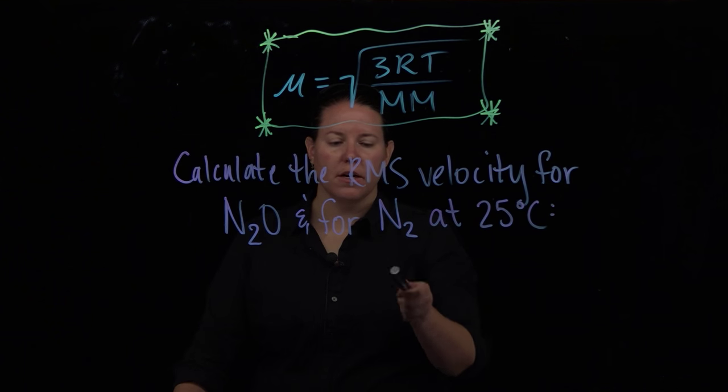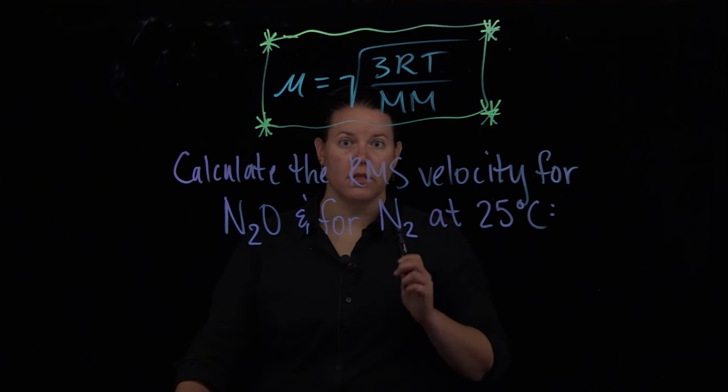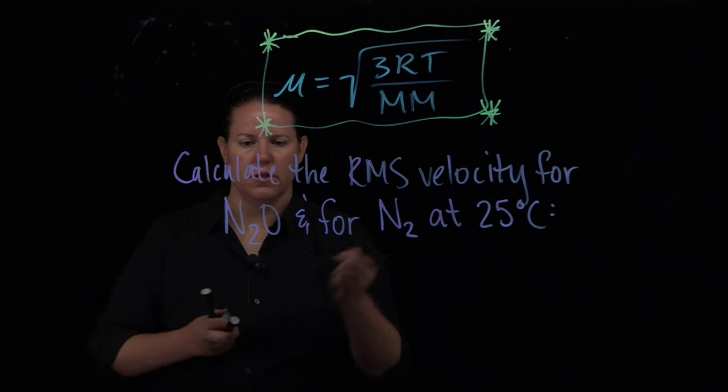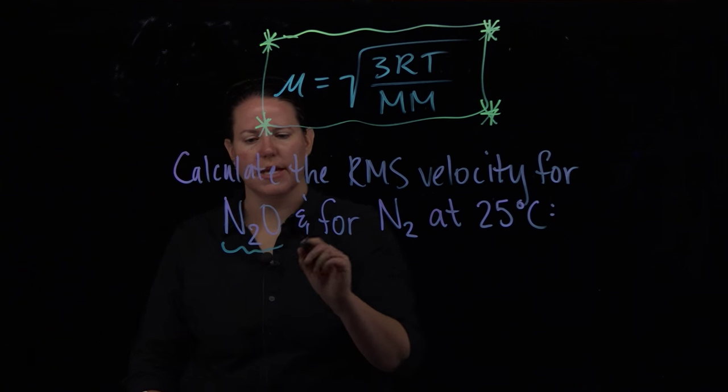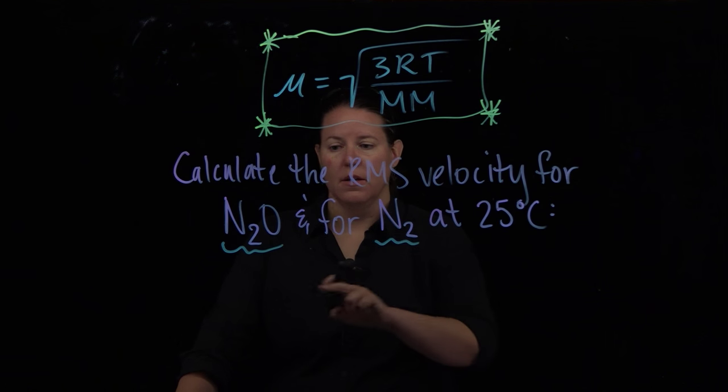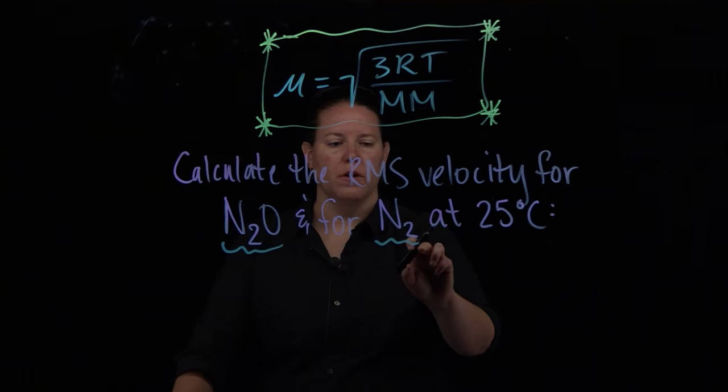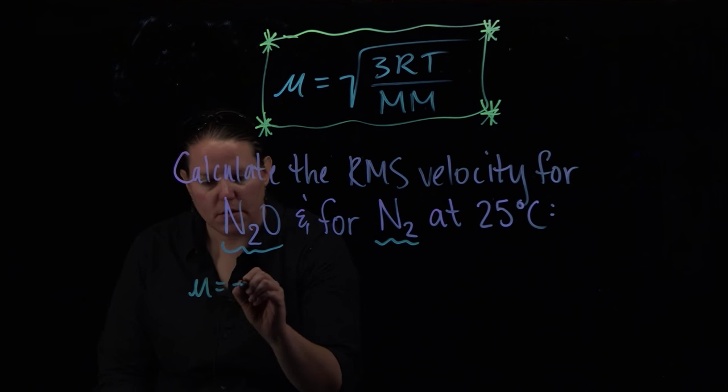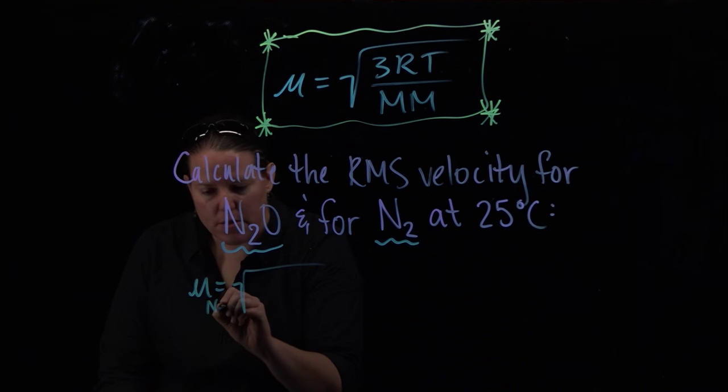So that we can kind of get a sense of does this formula actually work out for what we want it to do? Because we know that since that has an O on it, as opposed to just the two Ns, this one is the heavier particle and therefore should move slower.